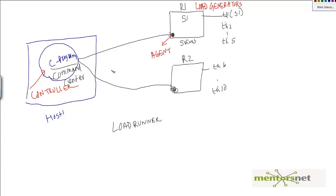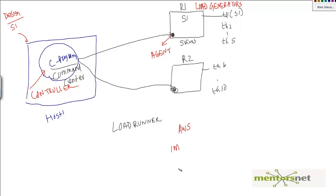So if you look at the LoadRunner architecture, you have the controller and the agent, plus your script which is always developed using VuGen — that's the develop time part. Once you develop the script, you open up your controller and run it for however many users you want. The load generator can be on your own machine or on a cloud provider like Amazon Web Services — a future video will show how to configure that. The advantage of this architecture is that it is extremely scalable: to simulate one million users, you just need to add more load generators.